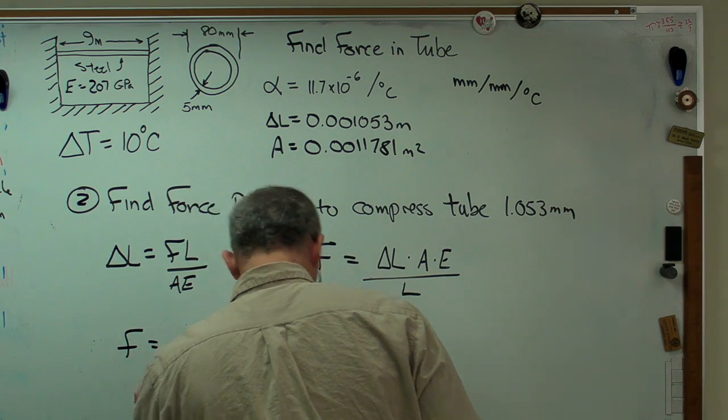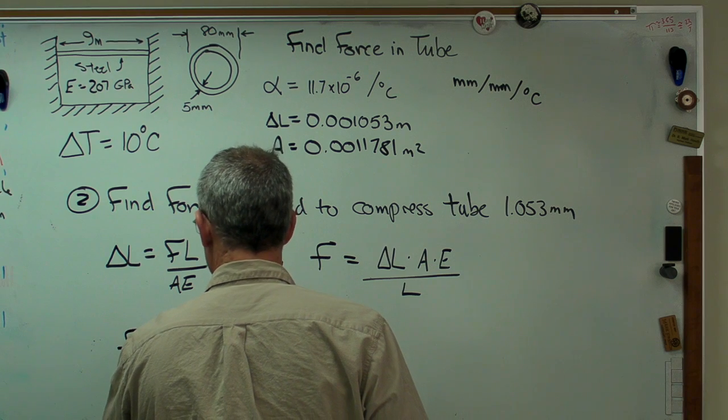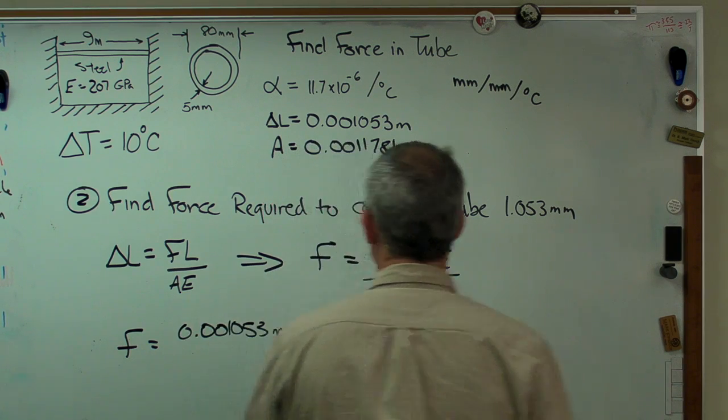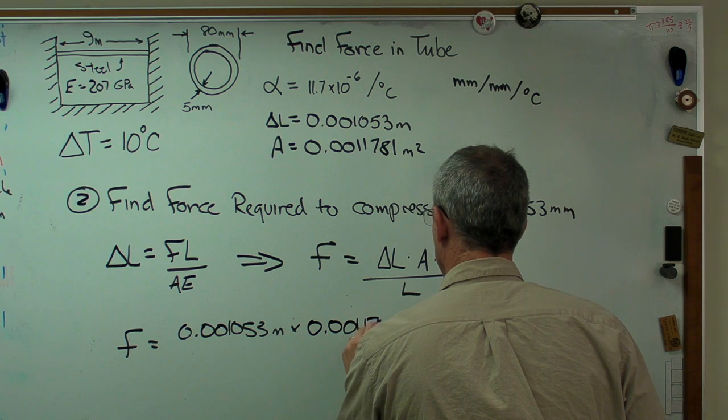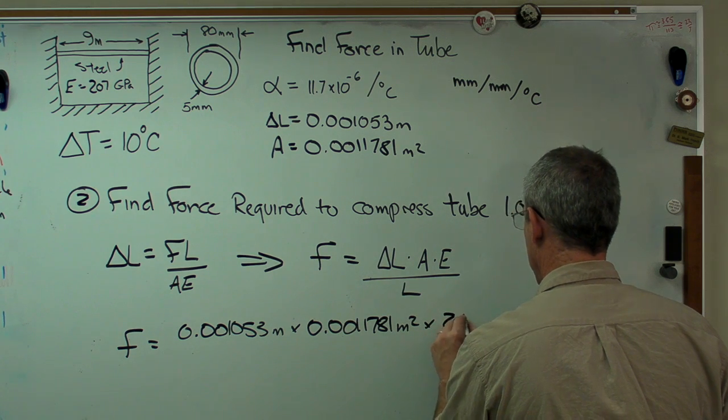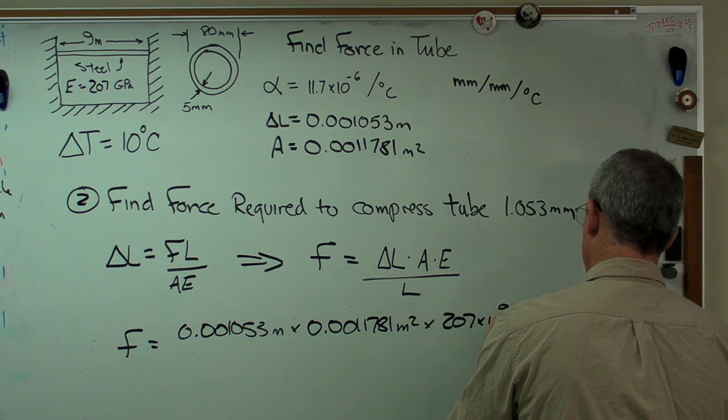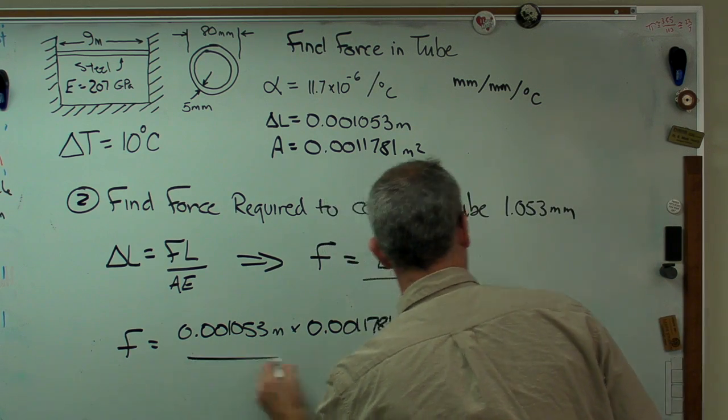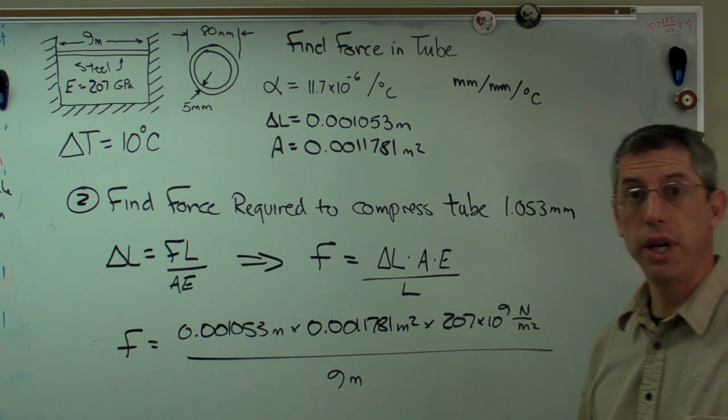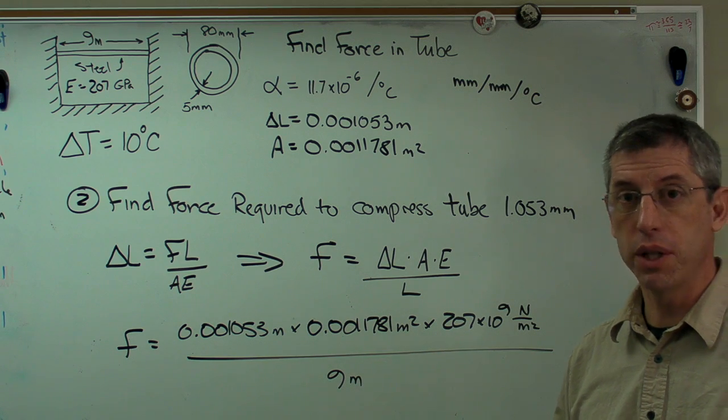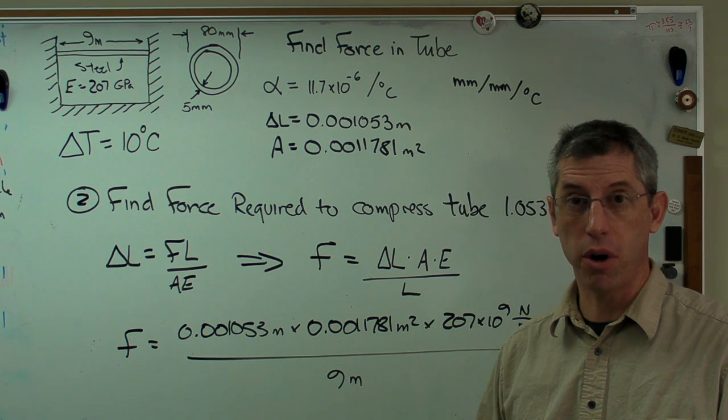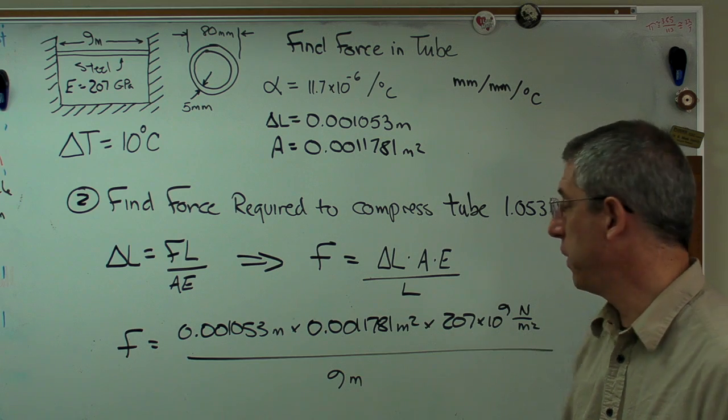So let's go ahead and put all those numbers in. My delta L is 0.001053 meters times my area, which I now know, 0.001781 meters squared, times E, which is a big number here, 207 gigapascals, all over 9 meters. Now, let's do a quick check and make sure all the units work out. Remember, always carry your units through the problem. Sometimes it seems a little awkward to do that. But when you check your units, when you check them all through the problem, you're going to get the right answer a lot more often than if you don't.